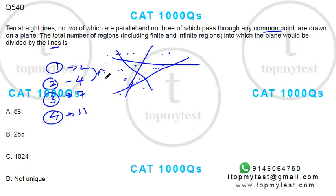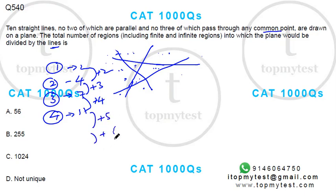From one to two lines you are adding two regions; from two to three you are adding three regions; from three to four you are adding four regions. So the next one will add five regions, then six regions. Similarly, the tenth line will add ten regions.